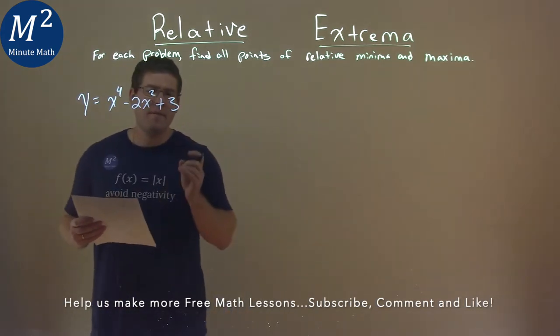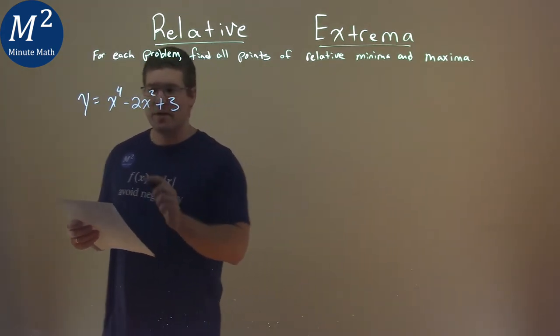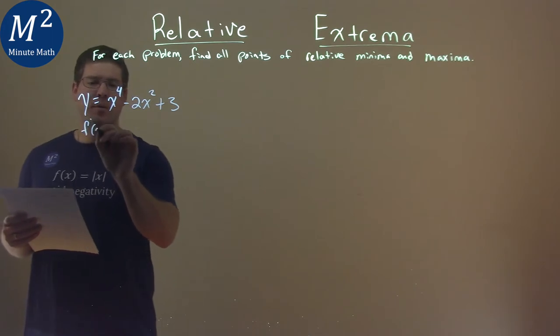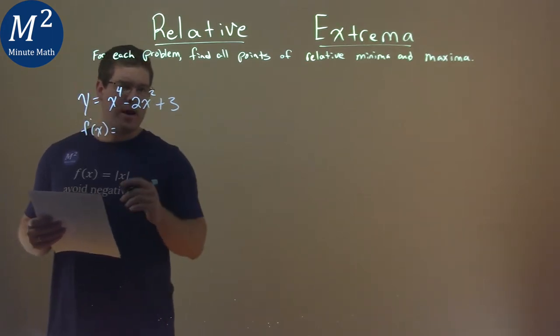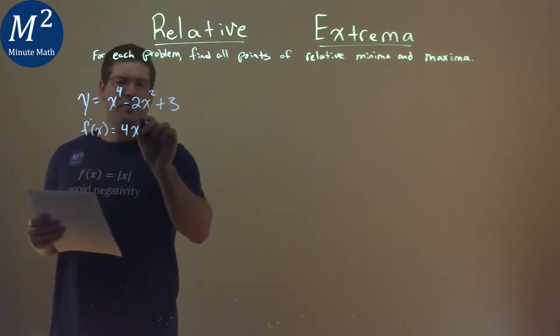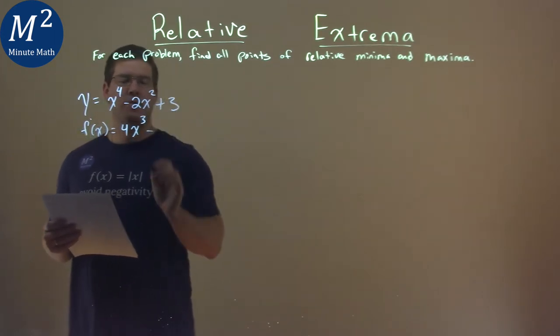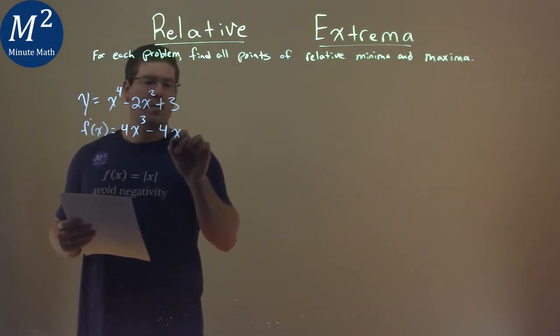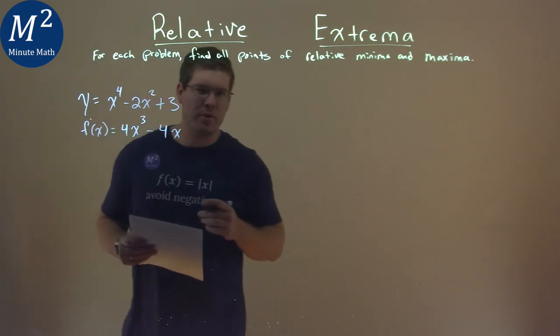Well, from here we want to first find our derivative. That's our first step here, so we find f prime of x, and we use the power rule. 4 comes down, x to the third power, minus 2 times 2 is 4, we have the x there, and then the derivative of 3 is just 0.